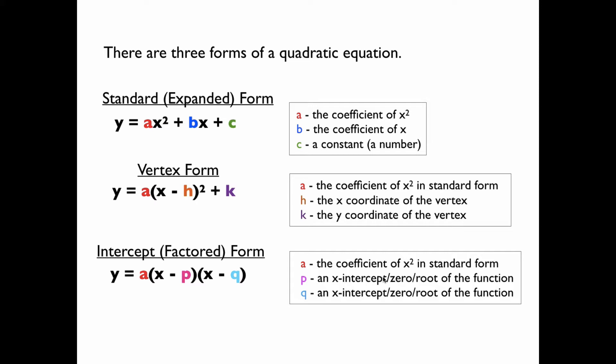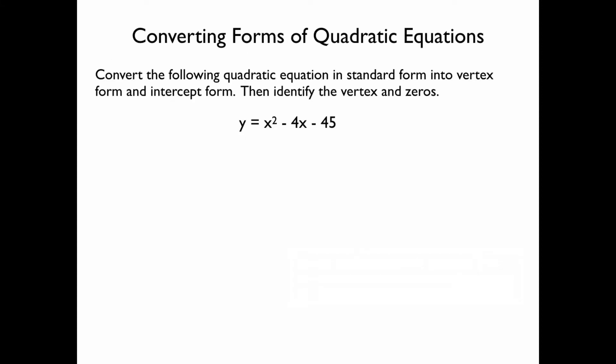What we're going to be doing today is taking an equation in one of these forms and rearranging it so that it looks like one of the other forms. Here's your first challenge: the equation y equals x squared minus 4x minus 45. This equation is in standard form. Try to turn it into vertex form, and then into intercept form. Once you've done that, you'll be able to identify the vertex and the zeros. Pause the video and attempt to do that.